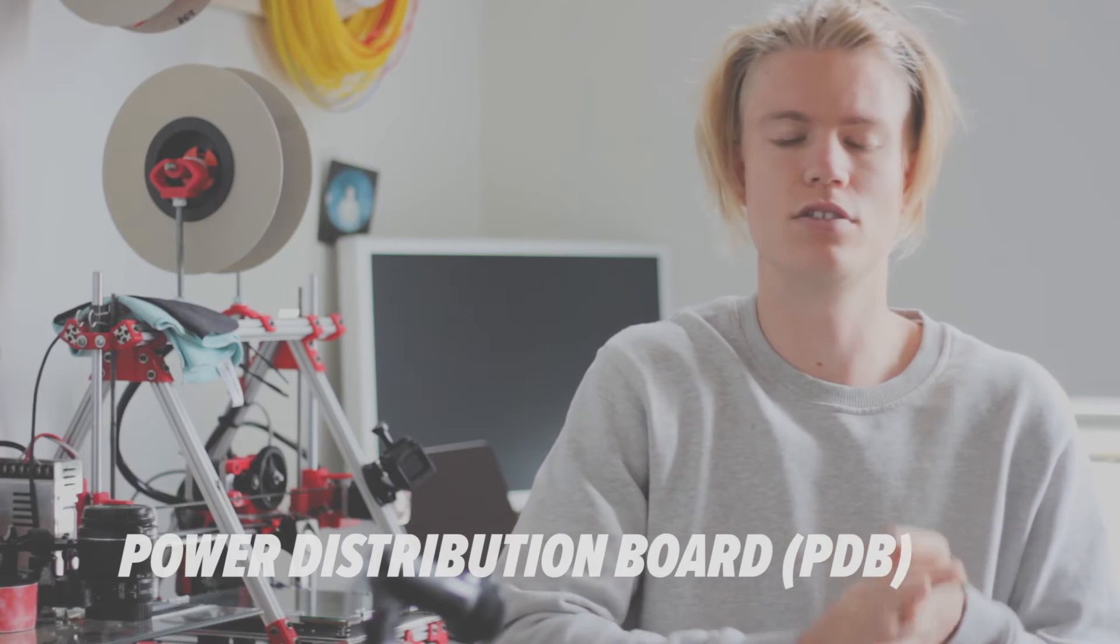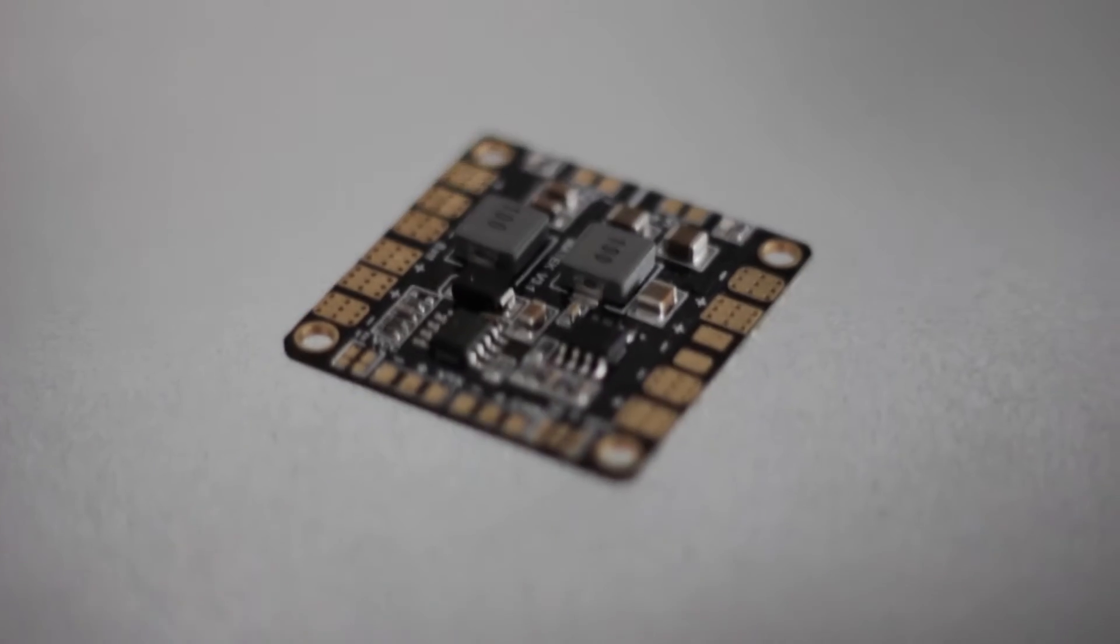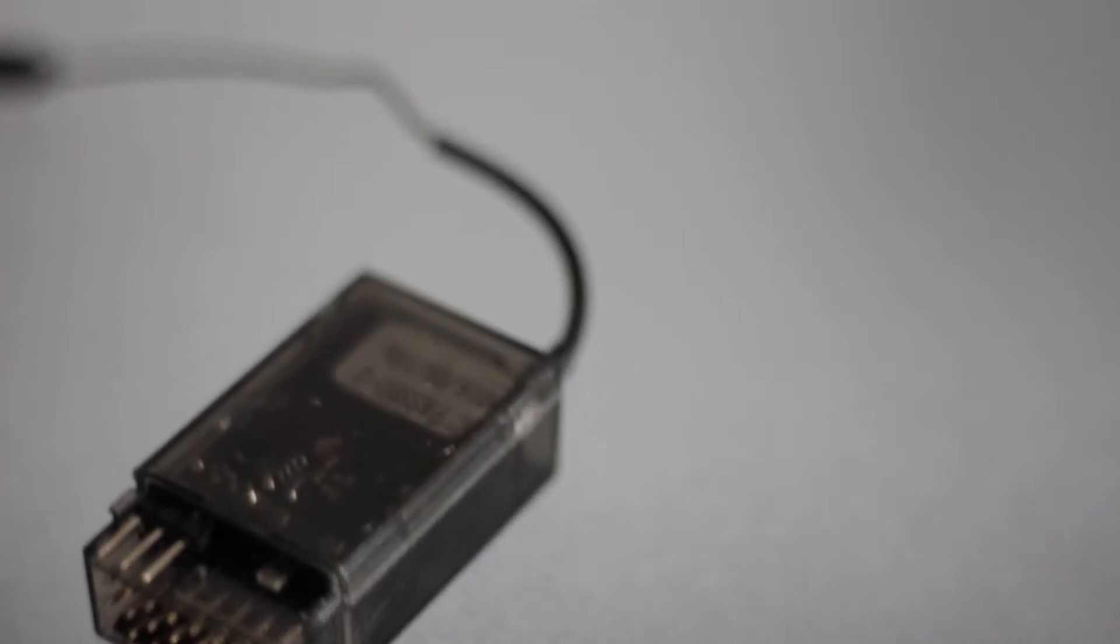It's helpful to have a power distribution board. It's not essential but it tidies up all your wiring by incorporating all the circuitry into one board. And the receiver - that's pretty obvious, it receives the signal from your transmitter and sends it on to the flight controller.